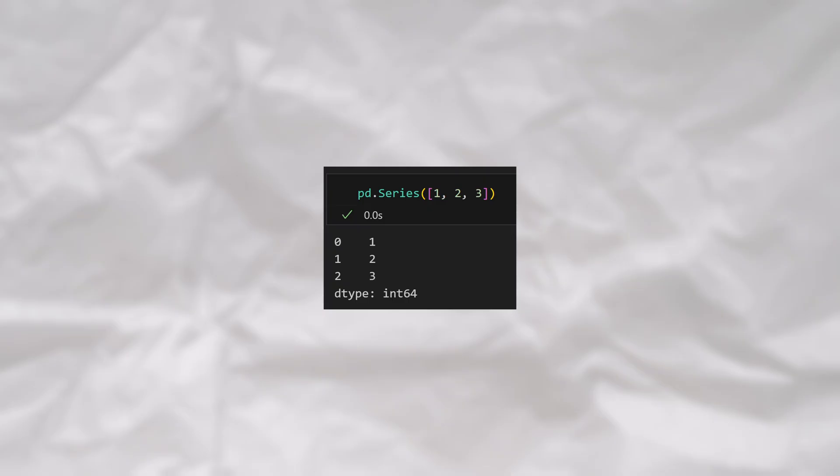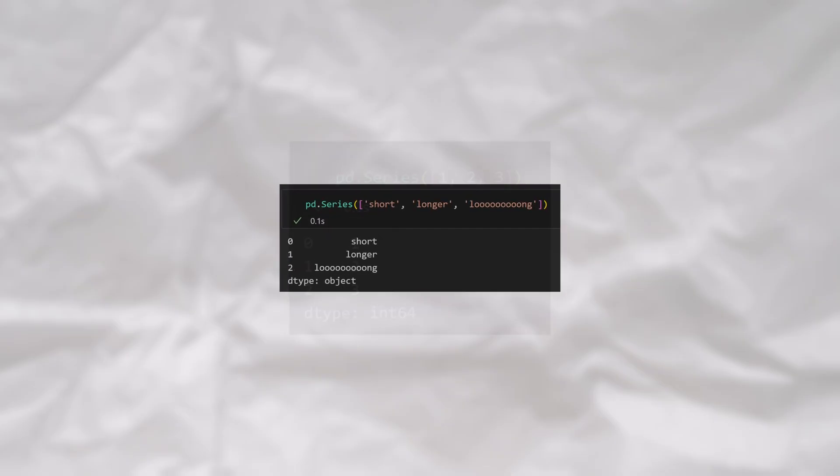Now, let's go ahead and change this to be a series of strings instead. When we print the series, you might expect that the data type should change from int64 to string, right? Interestingly enough, when we print the series, we can see that the data type is now an object. What happened?